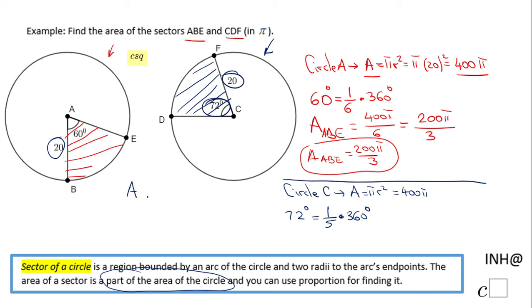So the area of the sector CDF will be 400 pi, the area of the circle, divided by 5 or multiplied by one-fifth, and that will be 80 pi. So the area of the sector CDF is 80 pi.